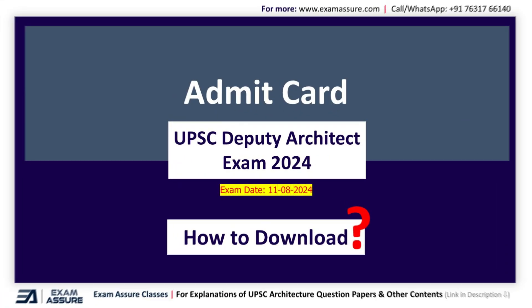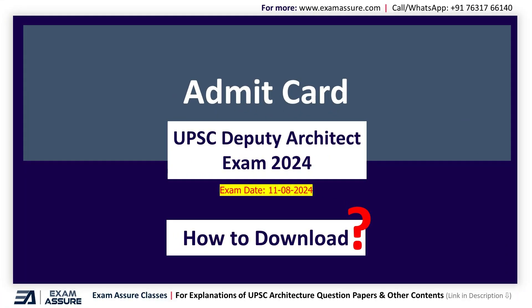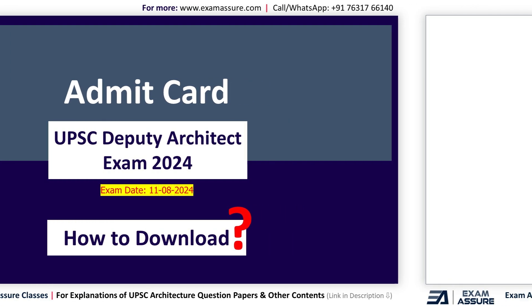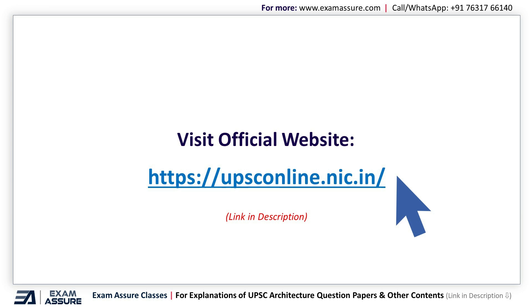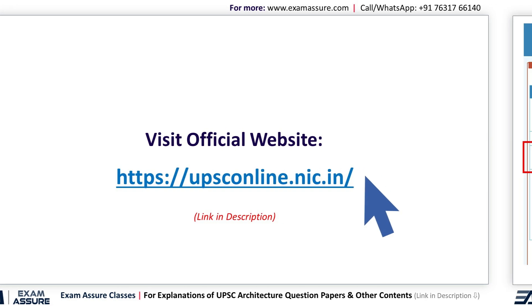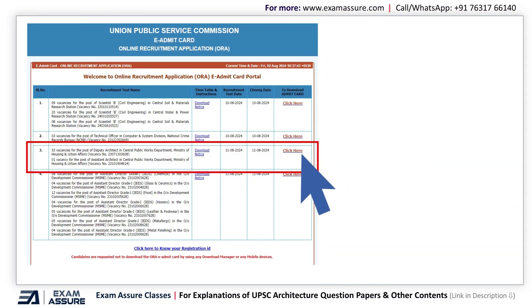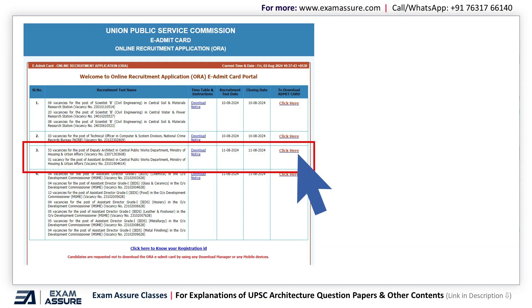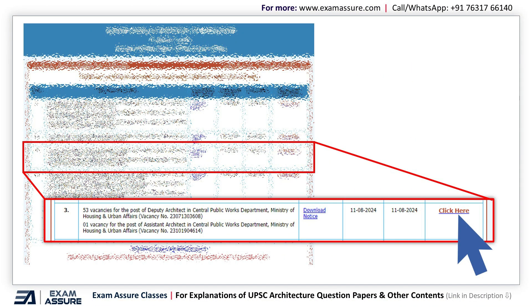Hello everyone, welcome back to Exam So YouTube channel. Today we'll be looking at the process to download the admit card for UPSC Deputy Architect Exam 2024. First, you have to visit the official website of UPSC, which is upsconline.nic.in. This screen will appear, and on the third number you will find the details of the Deputy Architect Exam.